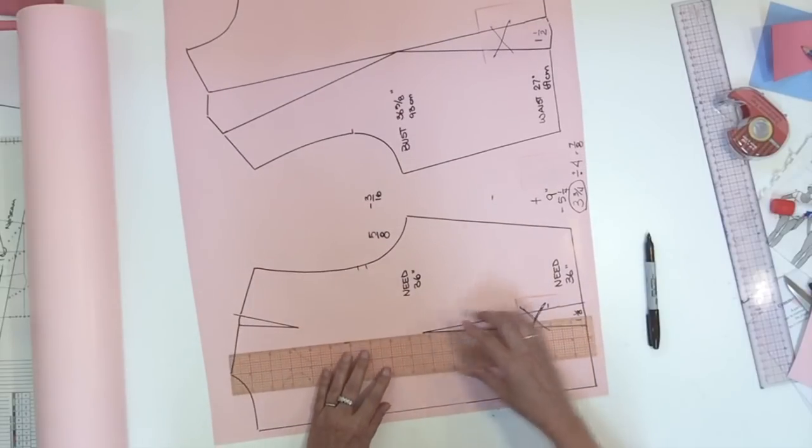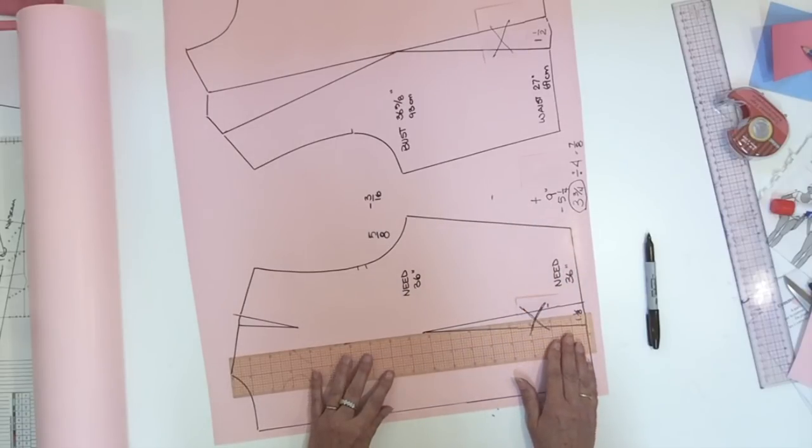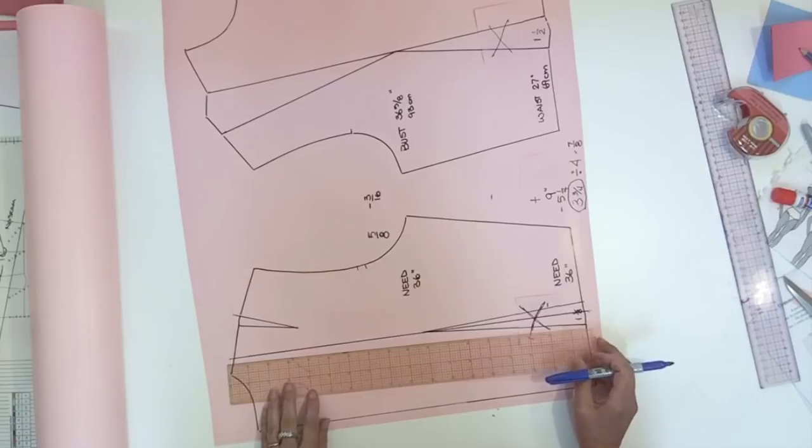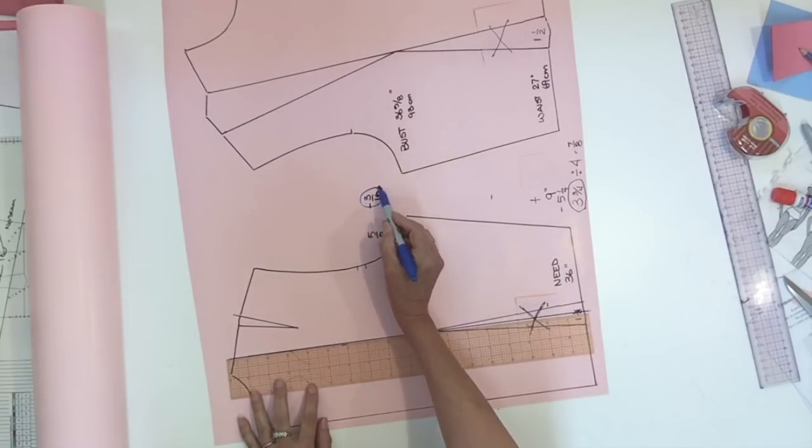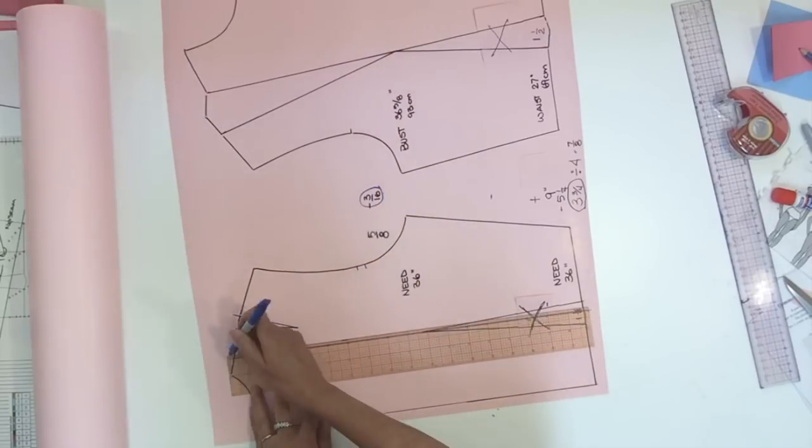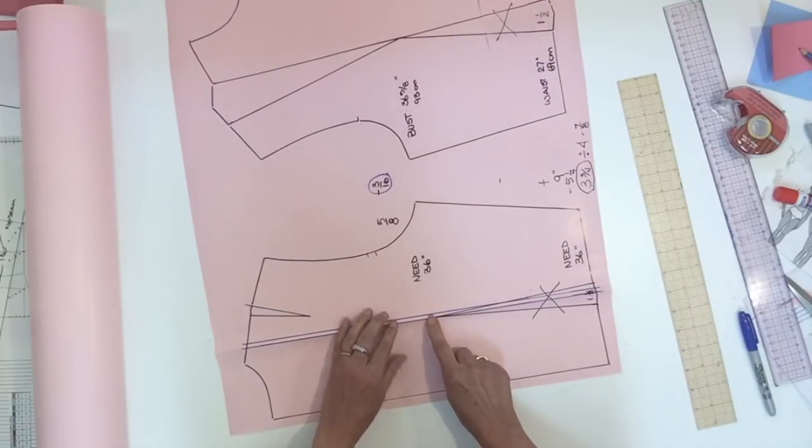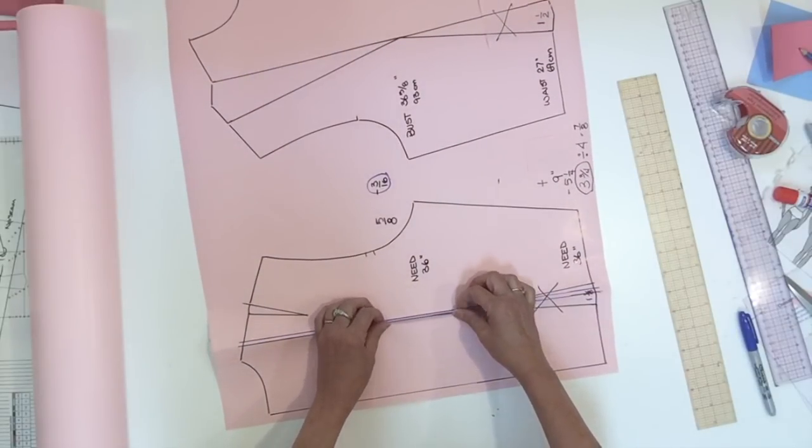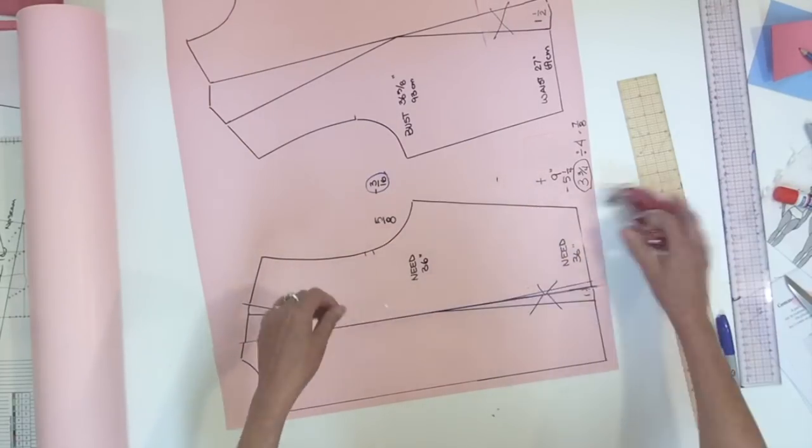I would trace a line top to the bottom passing by the pivot of the original dart even if we don't have it anymore. This line should be traced parallel to your center front or back. And then I would trace another one towards the side seam with the 3/16 that I need to remove. Then fold on the first line. Then bring the first over to the second one. Then glue the pattern right there.